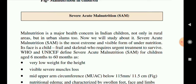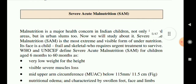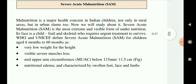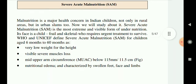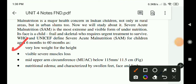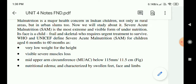Severe acute malnutrition is a very severe concern in India — these children are starving and not getting enough food. Their bodies are using protein to produce energy. WHO and UNICEF have provided defining criteria to help identify it easily. The mid-upper arm circumference (MUAC) is one of the key measures used.